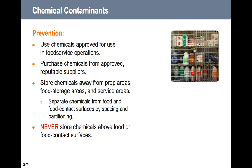The best methods of preventing chemical contaminants include: use chemicals approved for use in food service operations, purchase chemicals from approved reputable suppliers, store chemicals away from prep areas, food storage areas, and service areas. Separate chemicals from food and food contact surfaces by spacing and partitioning, and never store chemicals above food or food contact surfaces.